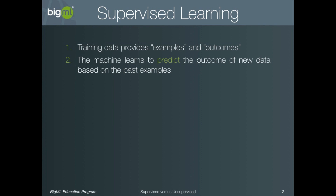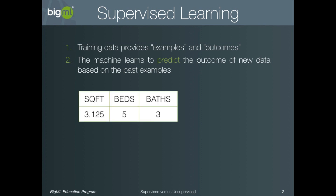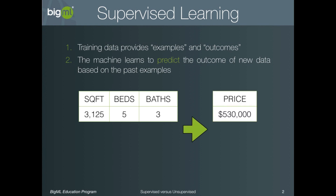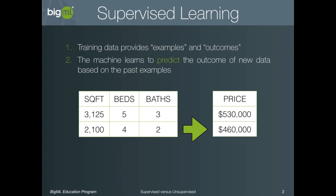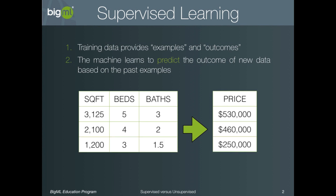Consider a dataset of homes that were recently sold. Our first example home could be 3,125 square feet with five bedrooms and three baths, and we might tell the algorithm that this home sold for $530,000. Next we might provide an example of a 2,100 square foot home with four beds and two baths that sold for $460,000. And maybe another home with 1,200 square feet, three beds and one and a half baths that sold for $250,000.